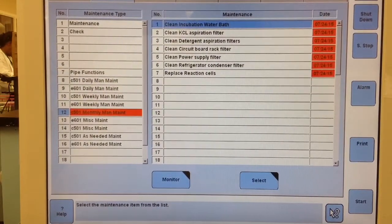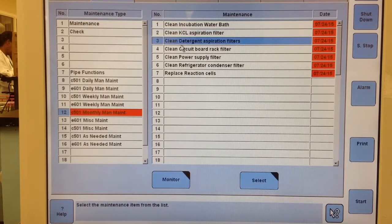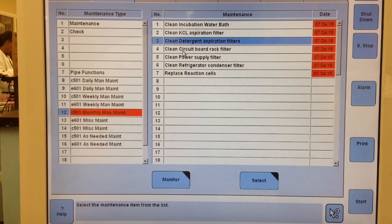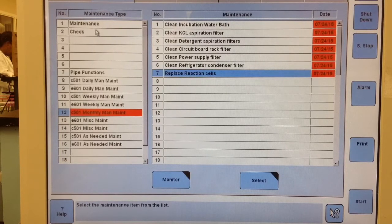A quick overview of what the monthly maintenance includes is incubation water bath cleaning, cleaning the KCL and detergent aspiration filters, and various other filters around the machine. In conjunction with the incubation water bath cleaning, we're going to replace the reaction cells.